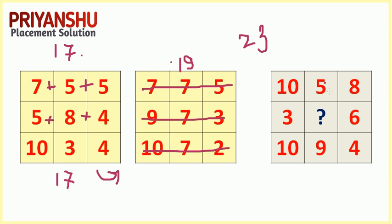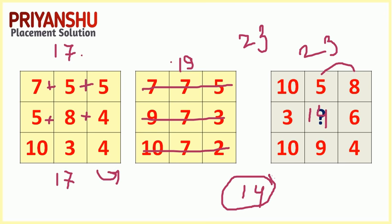So, 10 plus 13 is 23. And 3 plus 6 is 9, and 9 plus something should equal 23. That means the missing value is 14, because 9 plus 14 is 23. Also, 10 plus 9 is 19, and 19 plus 4 is 23. So the answer is 14. I hope you got it. Let's move on to the next question, friends.